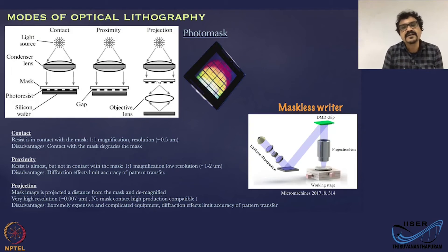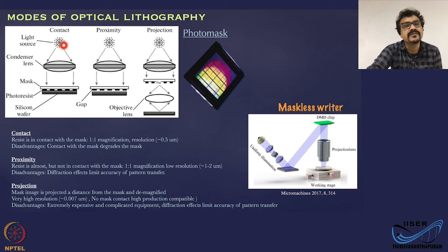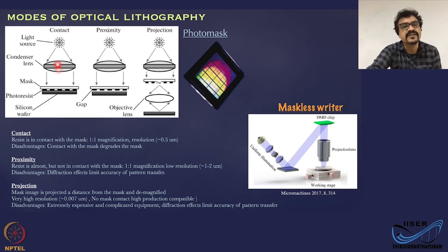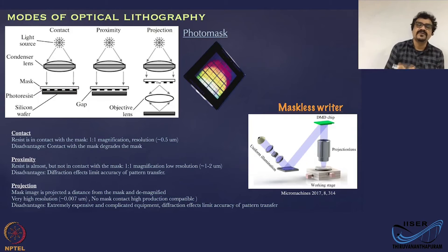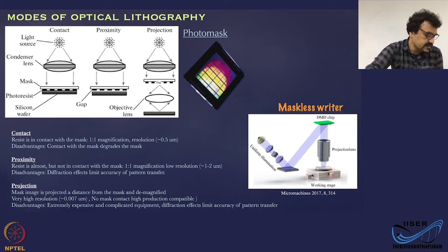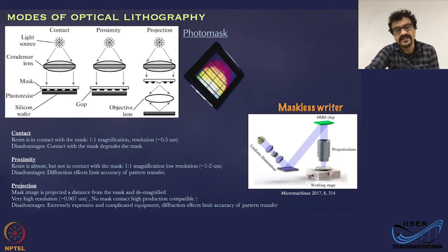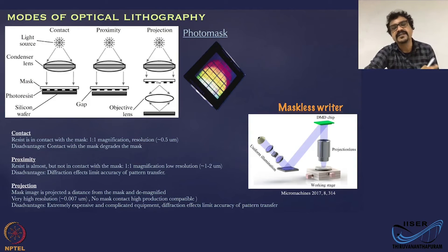Let us look at optical lithography in detail. You have a light source, then a mask which defines the master pattern, then optical systems that produce a parallel beam, and finally a photoresist-coated substrate. The mask is a glass or quartz plate coated with chromium, which has been patterned to the desired shape that will be transferred onto the substrate.